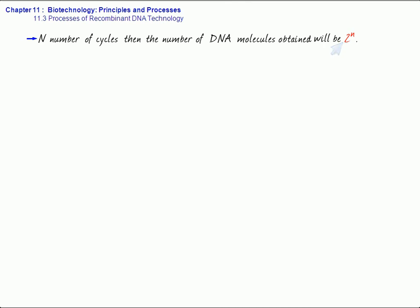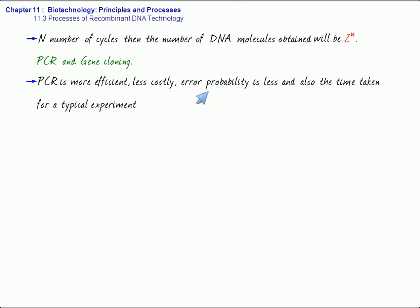So, if we compare the two, that is the PCR and gene cloning, then we find that PCR is more efficient, it is less costly, the error probability is less, and also the time taken for a typical experiment is comparatively much less. So, by means of this PCR, we can produce in vitro multiple copies of the gene of interest.